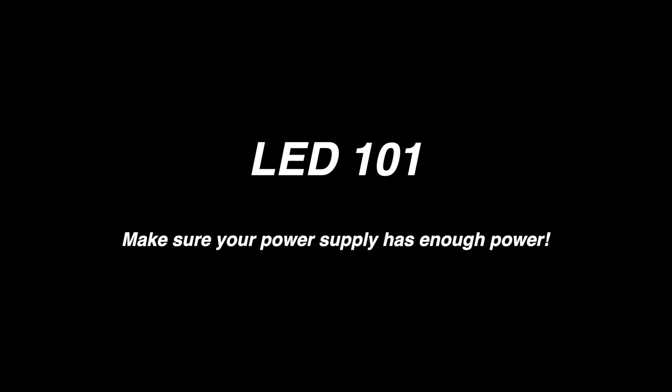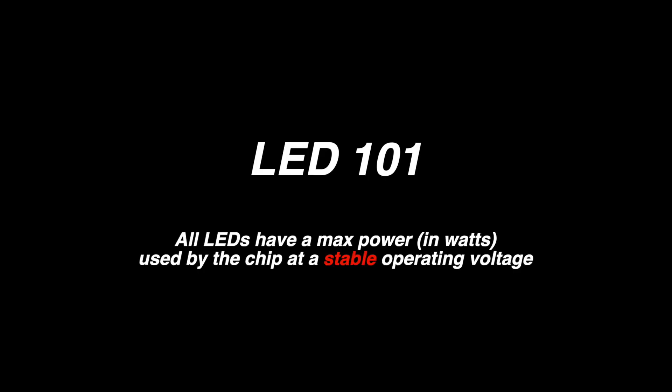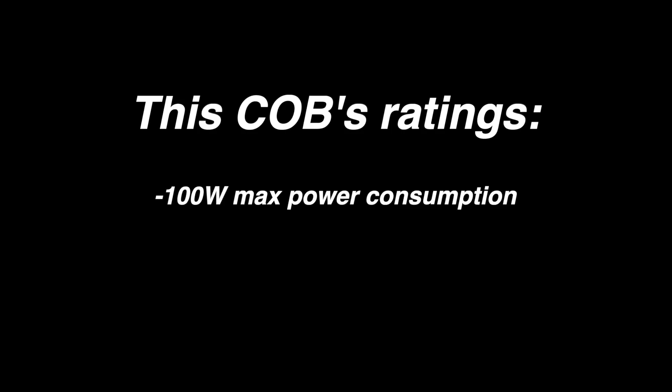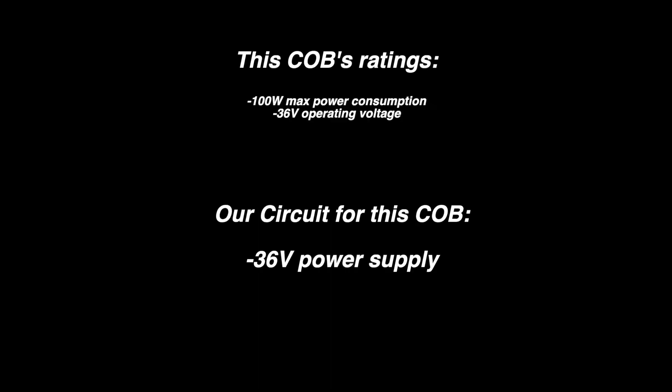Every LED has a max power in watts consumed by the chip at a stable operating voltage. Let's focus on this COB for a minute — it's rated for 100 watts at 36 volts. This means when designing our circuit we want a 36 volt power supply. Sure, the chip might turn on at 30 volts, but it won't reach its 100 watt potential until you give it the full 36 volts.